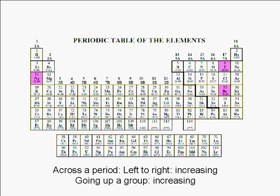Going up a group, the trend in electronegativity is increasing. Therefore, fluorine is more electronegative than bromine. And lithium, which is just above sodium, is more electronegative than sodium.